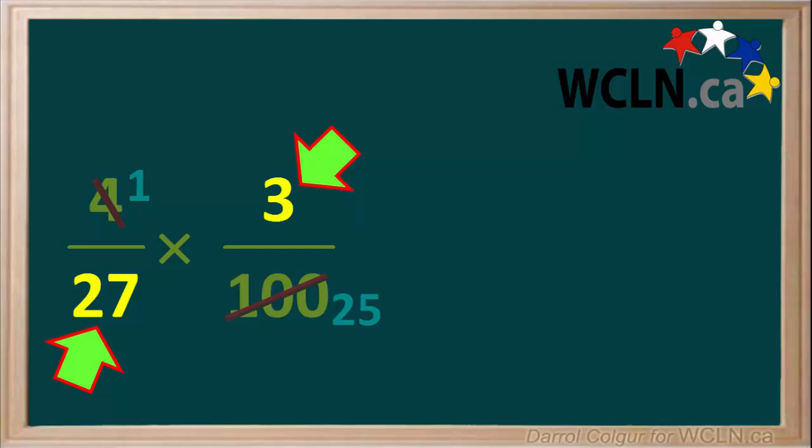Now we'll check the other two diagonal numbers and see if they can be cancelled and simplified. We realize that both 3 and 27 can be divided by 3. So we'll cancel these out and divide each of them by 3.